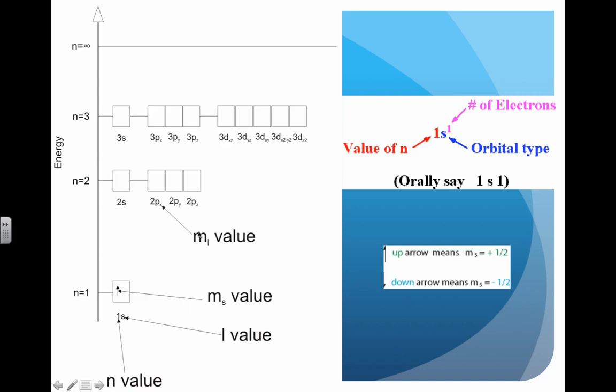Here's another example that relates the quantum numbers to what you see in our orbital diagram. Sometimes you'll see arrow diagrams written like this, and these correspond to the m sub l, m sub s, l, and n.